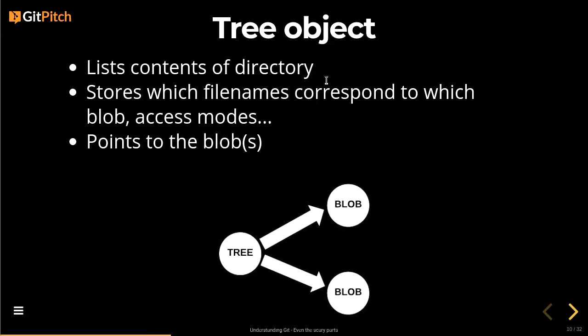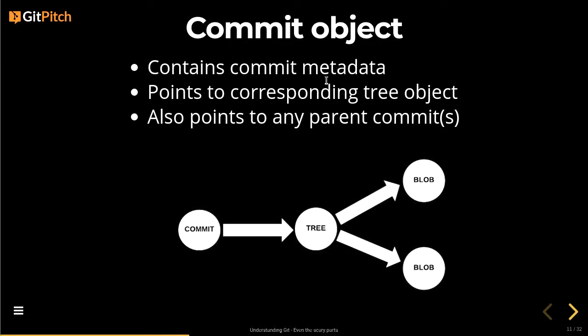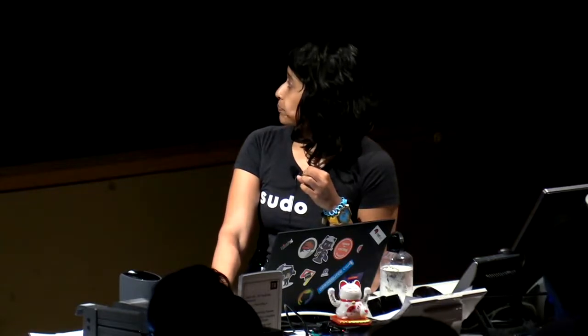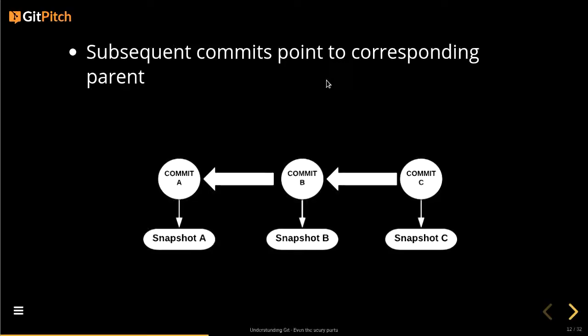The tree object also has information like access modes. The commit object is the main one — it has commit metadata like committer and author information, and it points to the tree object, which is how Git creates a snapshot of the repository at any point. The commit object also points to the previous or parent commits, so every commit has an associated snapshot and points to its parents — unless it's the initial commit, or it can have two parents if it's a merge commit.